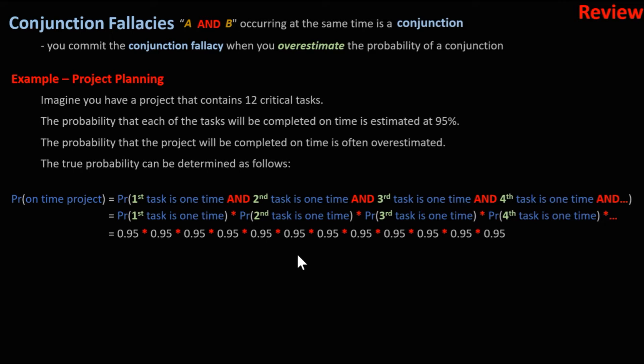We end up with 0.95 times itself 12 times, or 0.95 to the power 12. When we multiply decimals with each other, they quickly become smaller. In this case, the probability of the project coming in on time is 54%.